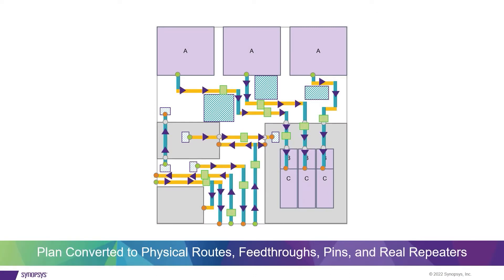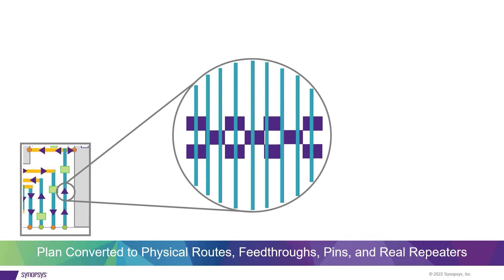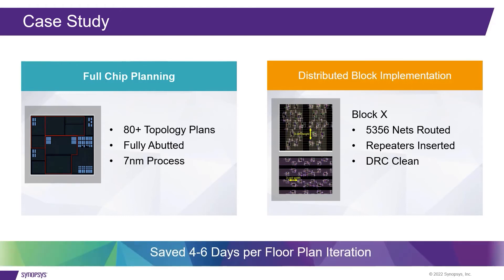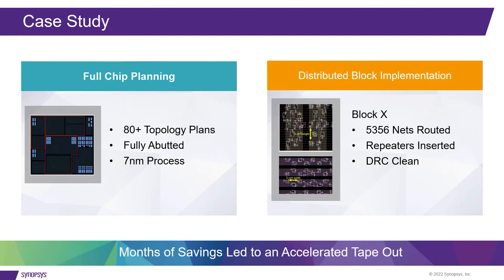Final implementation is through a push-button style that fully converts the plan to physical routes, feed-throughs, pins, and real repeaters. A full chip planning customer case study reported a reduction of four to six days per floor plan iteration, while 80-plus topology plans were used for a fully abutted 7nm design. This result achieved the highest level of overall chip performance with months of saving, leading to an accelerated tape-out. Distributed block implementation runtime was only 70 minutes for over 5,000 routes, with repeaters inserted and the block came out DRC clean.